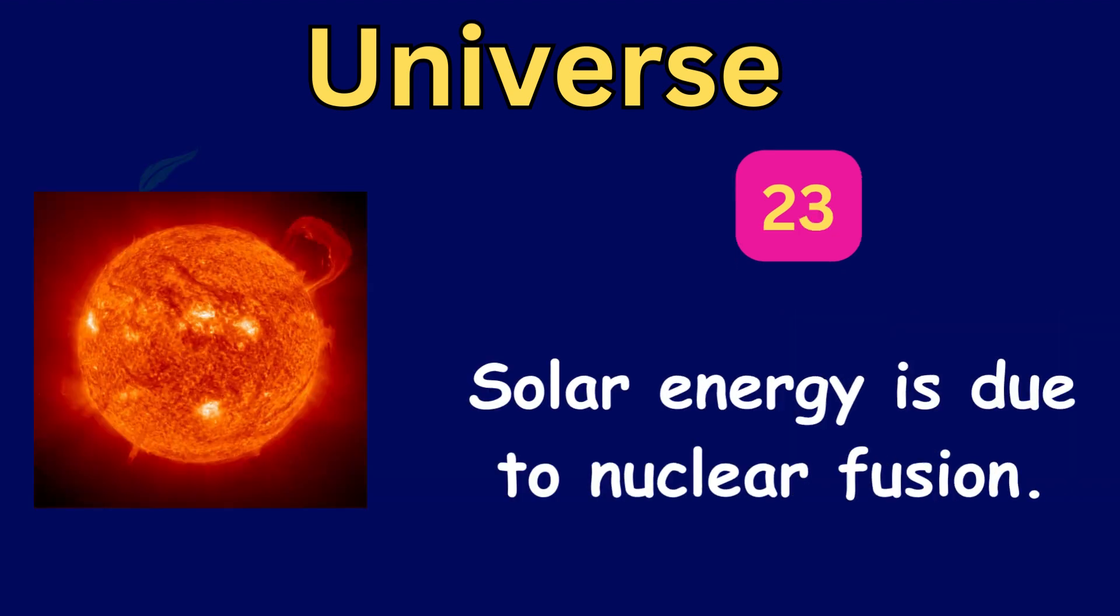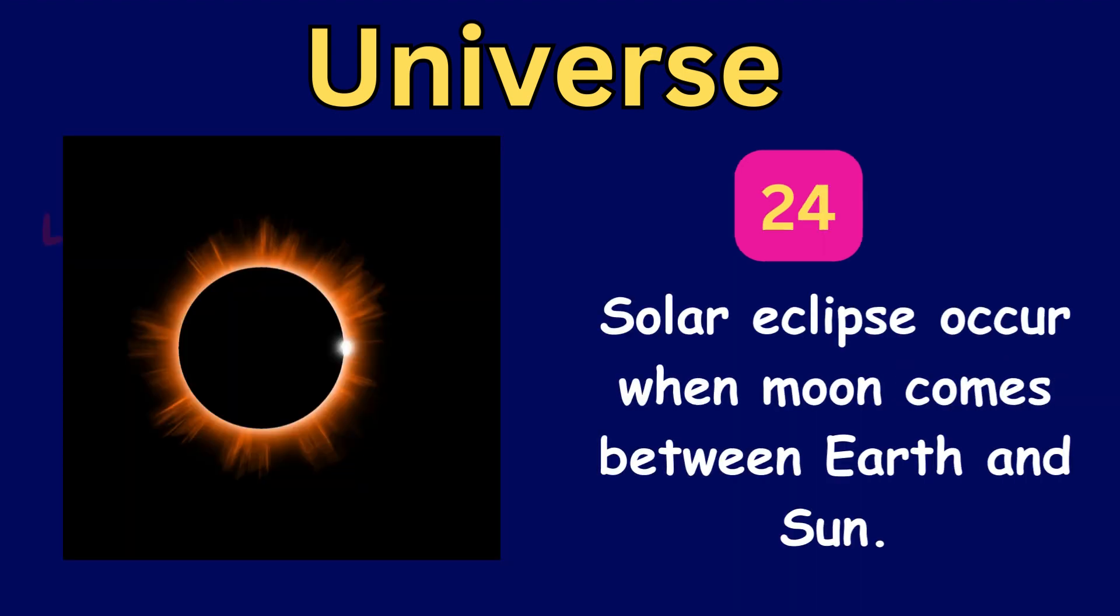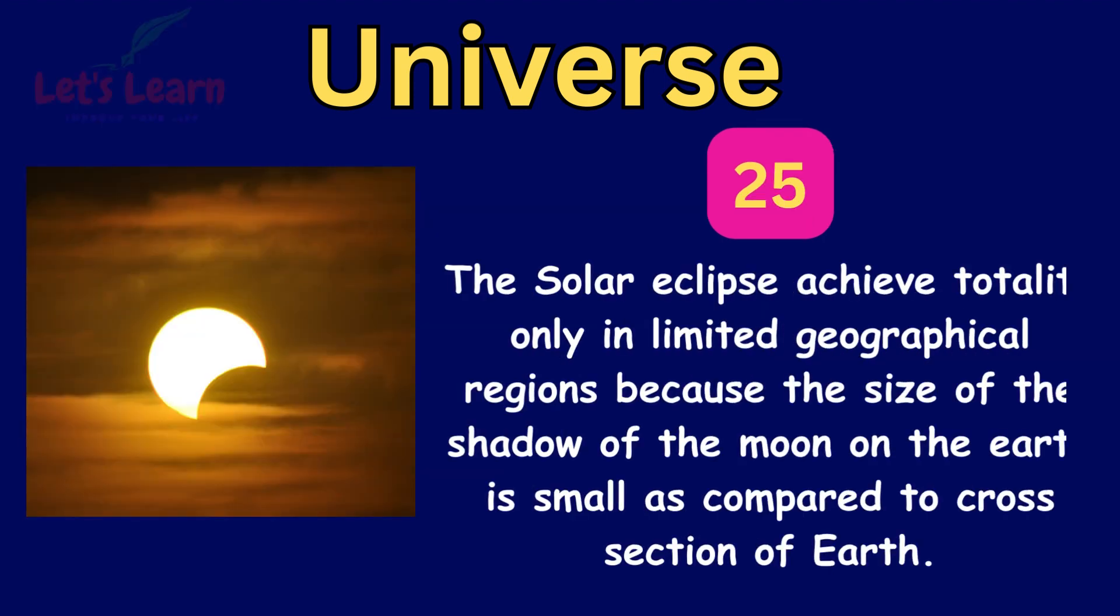Solar energy is due to nuclear fusion. Solar eclipse occurs when Moon comes between Earth and Sun. The solar eclipse achieves totality only in limited geographical regions because the size of the shadow of the Moon on the Earth is small as compared to cross-section of Earth.